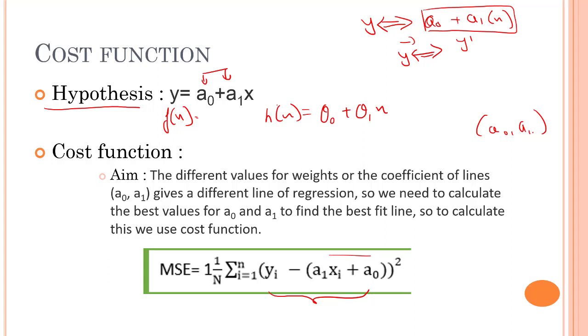The different values for weights or the coefficient of line gives different line of regression and the cost function is used to estimate the value of the coefficient for the best fit line.